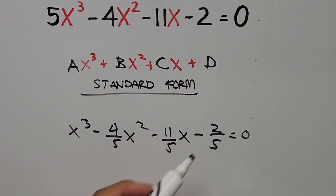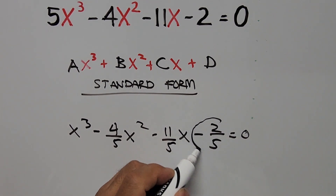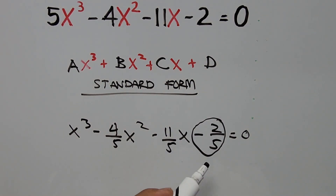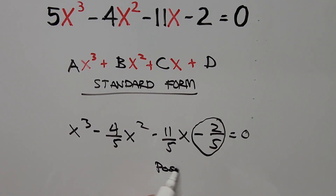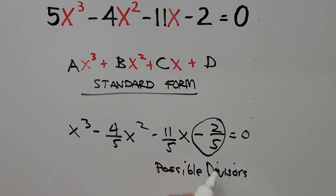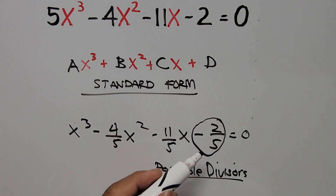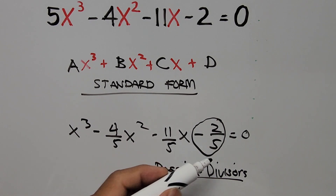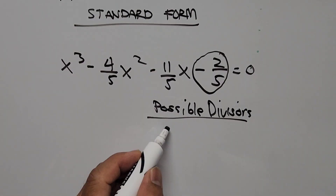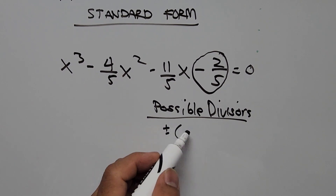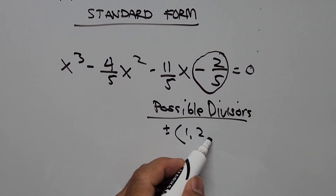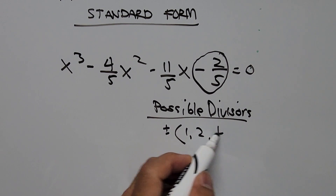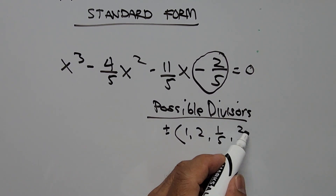Here, let's focus our attention on the constant term of the equation: negative 2/5. We'll find the possible divisors — the factors of 2/5 — which are: positive/negative 1, positive/negative 2, positive/negative 1/5, and positive/negative 2/5.